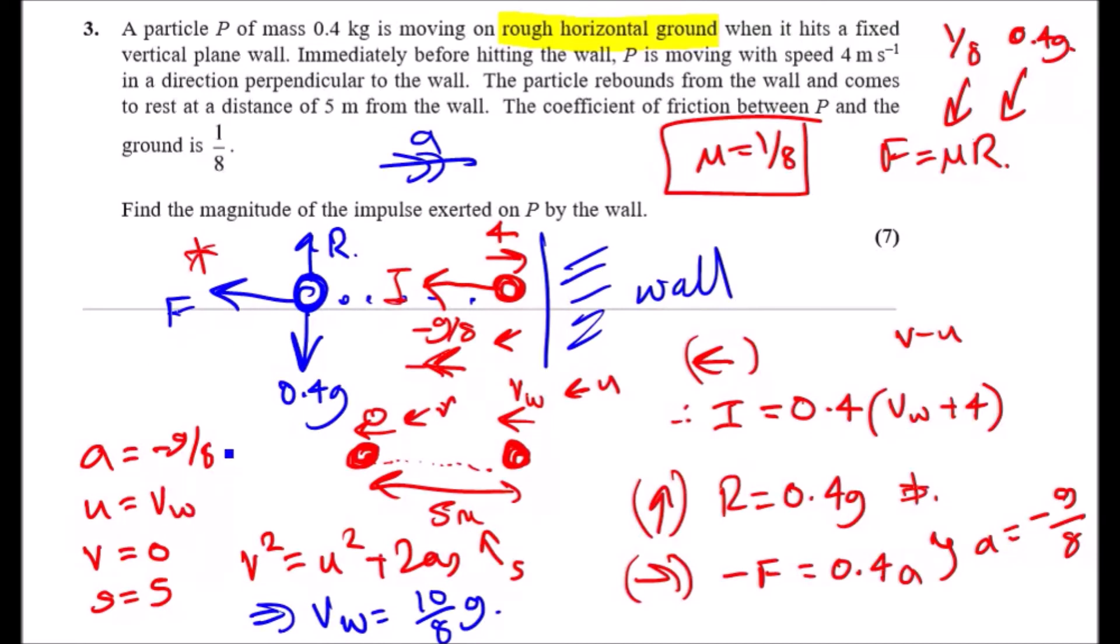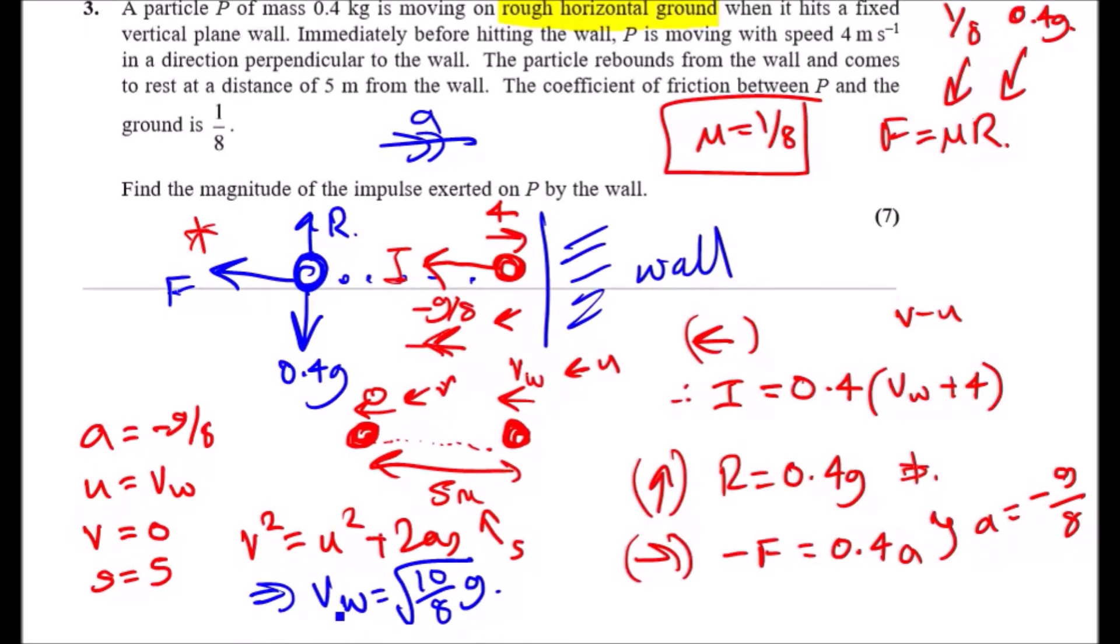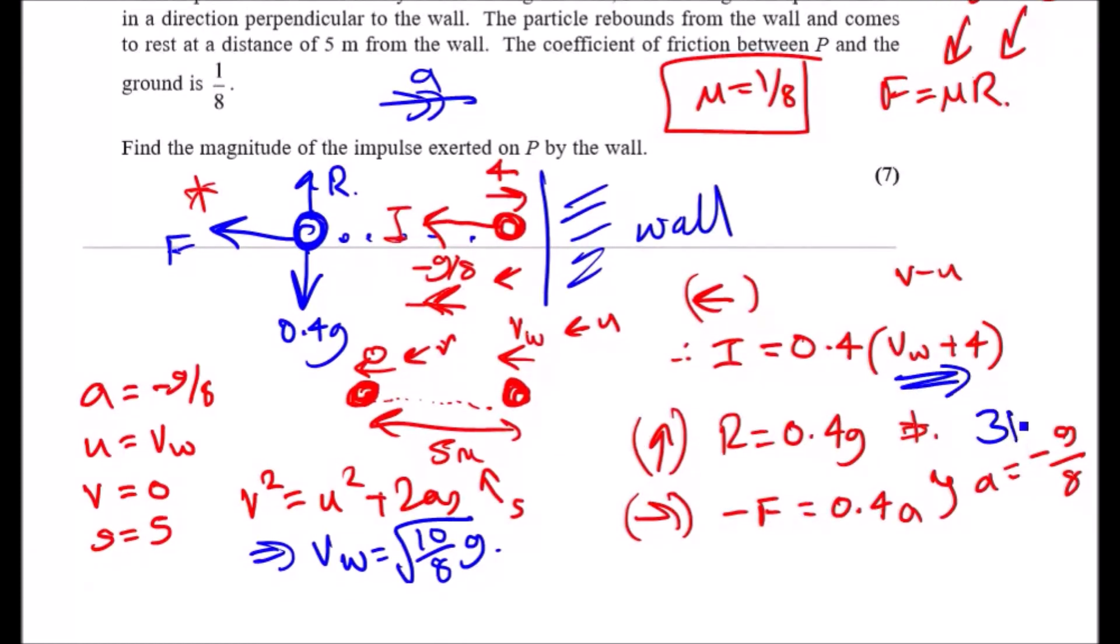Now, since you got your speed over here, square root, obviously. That's it. Now that you got your VW here, just literally smash into this equation here, and you should get your final result. So, plug it in, I should get, so 0.4 times square root of 10 over 8 times 9.8 plus 4. Yep, you should get exactly 3N, so therefore, the general solution would be 3N for the impulse.